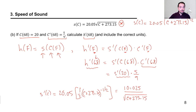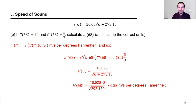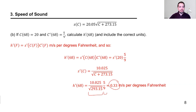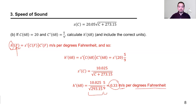Computing this numerically gives approximately 0.33. The units: H measures speed of sound (meters per second) as a function of temperature in Fahrenheit, so the units of H prime are meters per second per degree Fahrenheit.